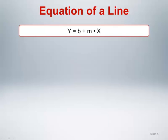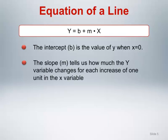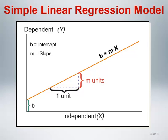If you recall from basic high school algebra, the equation of any straight line can be described as a simple function of the intercept, here designated as b, and the slope, here designated as m. The intercept is the value of Y when X equals 0. The slope tells us how much the Y variable changes for each change of one unit in the X variable. We can show these relationships graphically. The intercept b is represented by the distance from the X-axis to the point where the orange line crosses the Y-axis, and the slope is represented by the red distance indicating the change in height of the yellow line for each one unit change in the value of X. For the body fat data, the slope would be the change in percentage body fat for each one centimeter change in abdomen circumference.